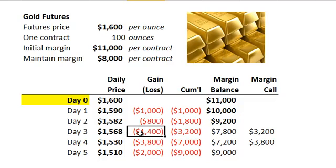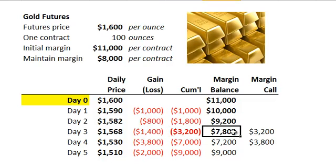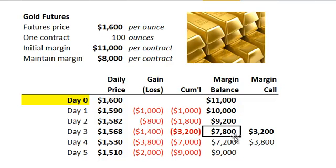Day three, another drop — a daily loss of $1,400. The cumulative loss is now $3,200, such that the margin balance is down to $7,800, which is below the maintenance margin. This is really what the question is quizzing: the margin balance has dropped below the maintenance margin, which triggers a margin call. Here is the tricky idea: the margin call is not just $200 to top this back up to the maintenance margin. Rather, the maintenance margin is the trigger, but the margin call requires Alan to restore the balance back to the initial margin. So the margin call is for $3,200 to bring the margin balance back to $11,000 per contract.